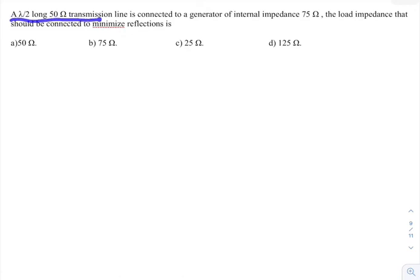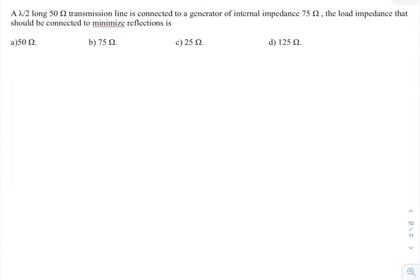A lambda by 2 long 50 ohm transmission line is connected to a generator of internal impedance 75 ohms. The load impedance that should be connected to minimize the reflections is: 50 ohm, 75 ohm, 25 ohm, or 125 ohm.